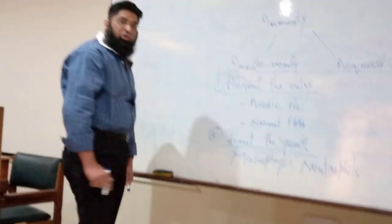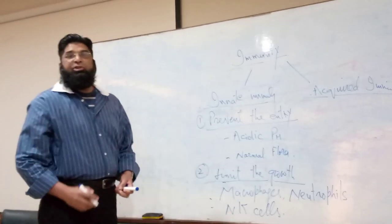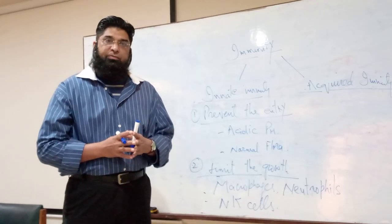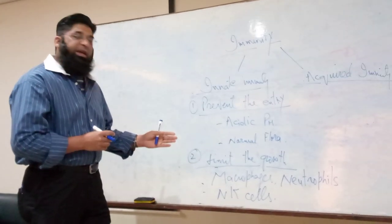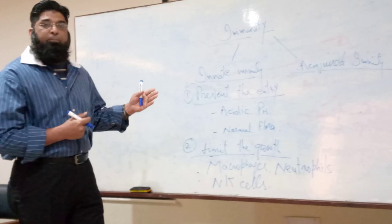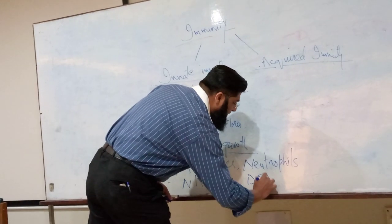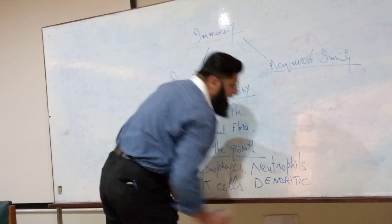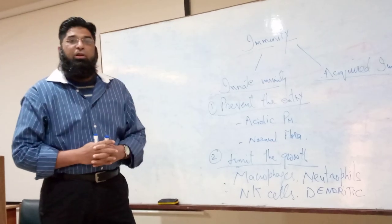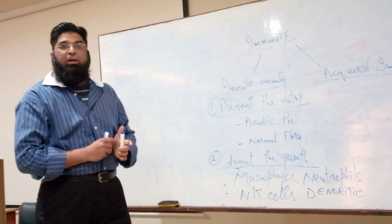Other cells include natural killer cells. Natural killer cells are specialized lymphocytes — they are larger in size than B and T lymphocytes, and they are important participants of innate immunity. Dendritic cells are bone marrow-derived leukocytes that also perform the function of defending the body against microorganisms.